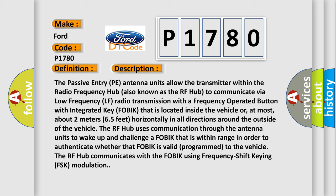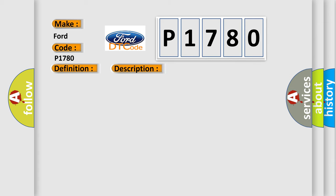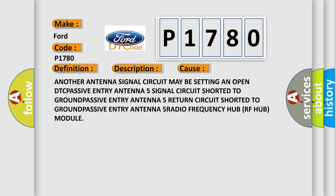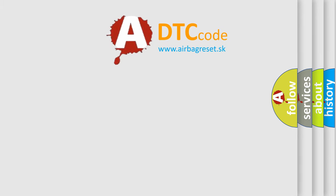This diagnostic error occurs most often in these cases: another antenna signal circuit may be setting an open DTC; Passive Entry Antenna 5 signal circuit short to ground; Passive Entry Antenna 5 return circuit short to ground; or a fault with the Passive Entry Antenna 5 Radio Frequency Hub (RF Hub) Module. The Airbag Reset website aims to provide information in 52 languages.